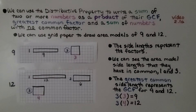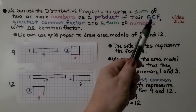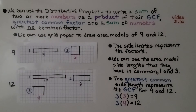We can use the distributive property to write a sum of two or more numbers as a product of their GCF — the greatest common factor — and a sum of numbers with no common factor. If you're confused about the GCF, we covered that in video 2.1, which is linked in the description.